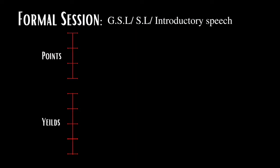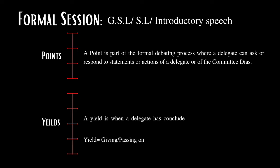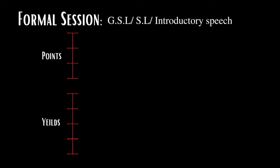Model UN conferences have certain points and yields to make debate smooth and inclusive, and these vary from procedure to procedure. A point is part of the formal debating process where a delegate can ask or respond to statements or actions of a delegate or committee dais members. A yield is when a delegate has concluded their speech before time and uses the extra remaining time by yielding it to other participants or the dais. Note that there are no provisions to yield in UN4MUN procedure.